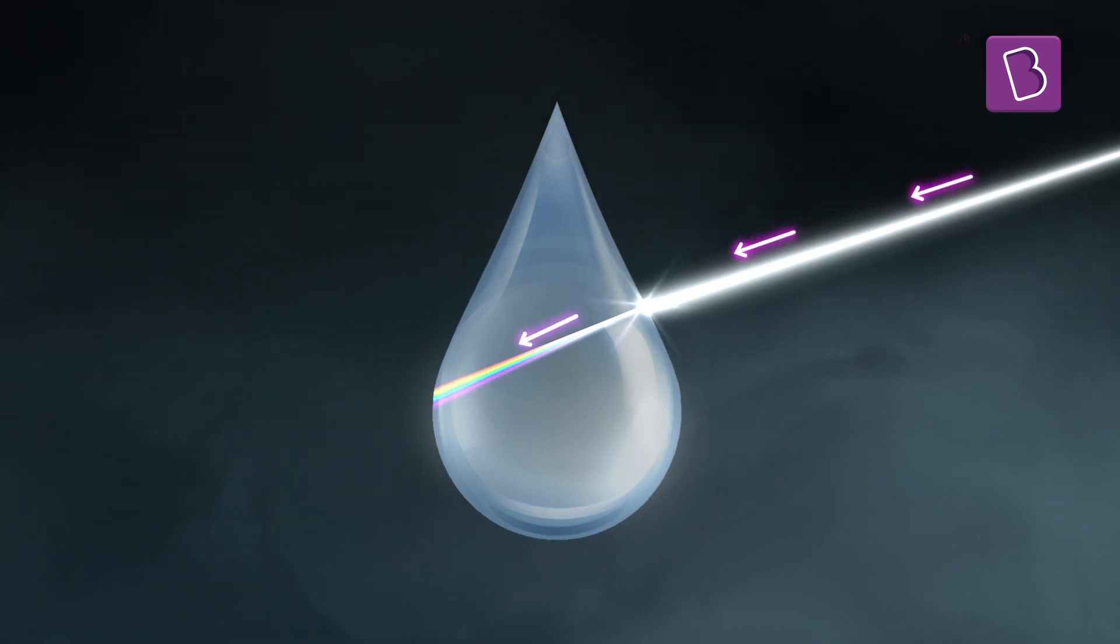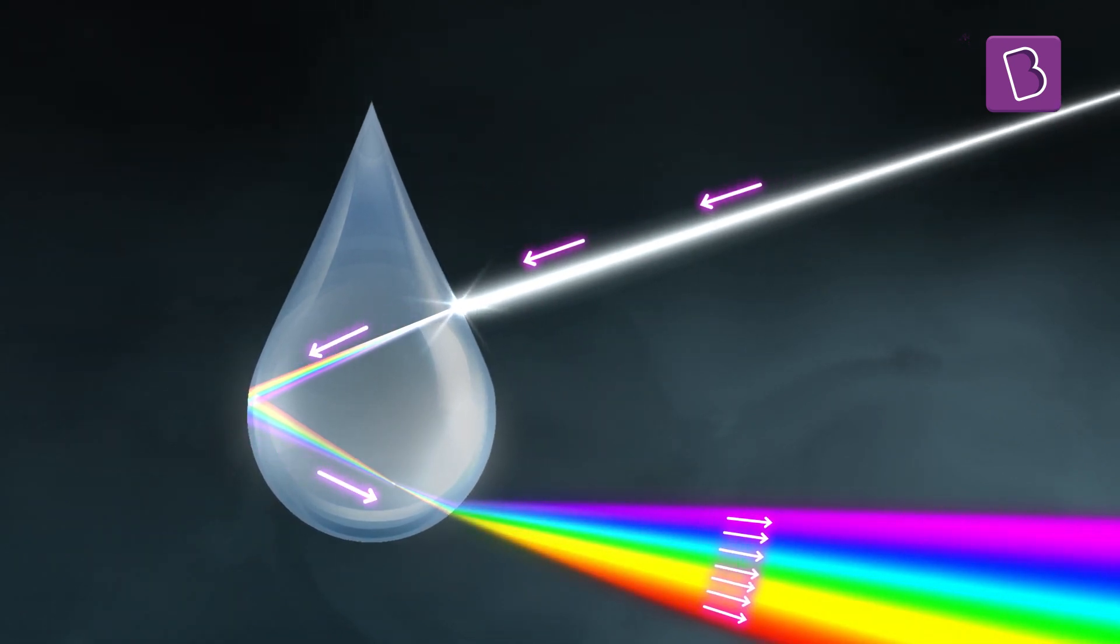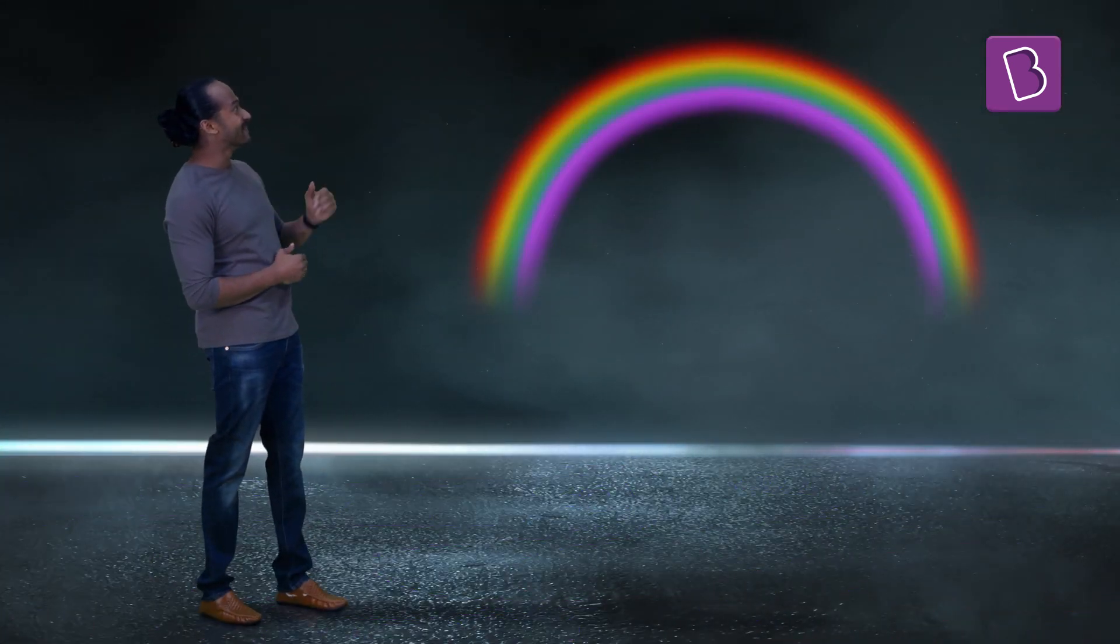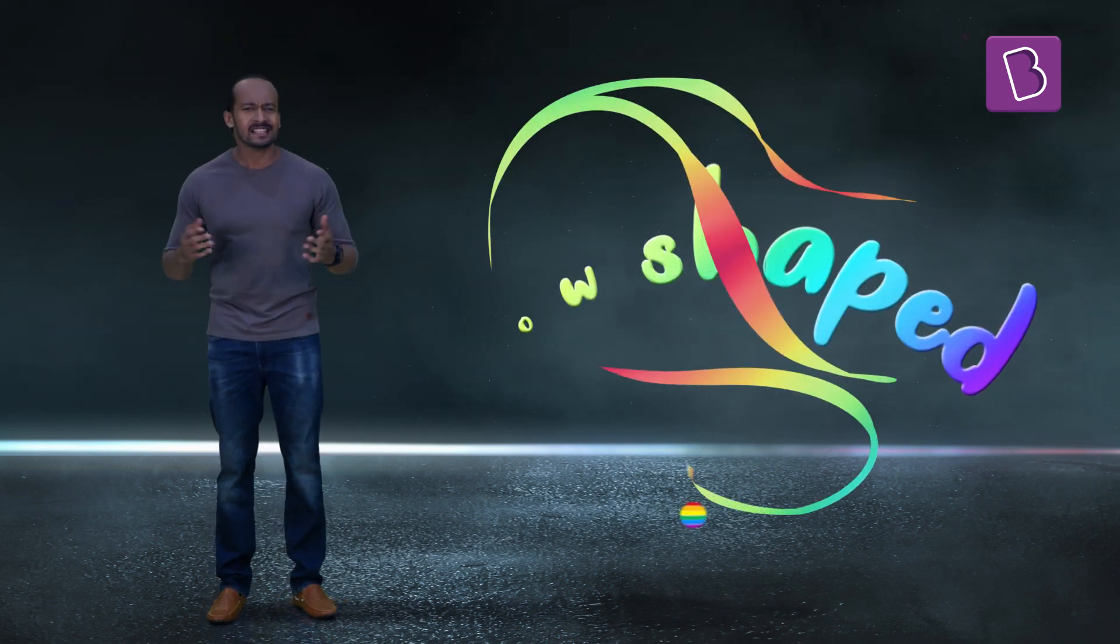The droplets will refract and hence split light into seven colors just as a prism does. Yes, a rainbow is in the making. Great, but why is it bow-shaped?